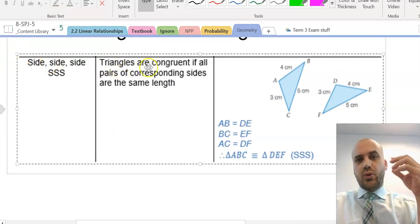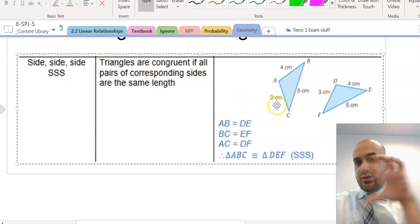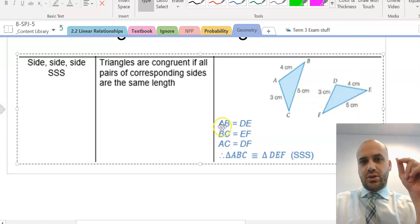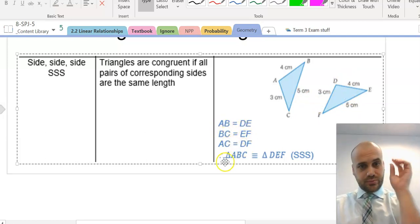The SSS test if all of the sides are the same length. And you can see here we have these triangles. No information about the angles, but we do know it's got this 3, 4, 5 going on. This 3, 4, 5 going on. So, this side equals this side, this side equals this side, this side equals this side.